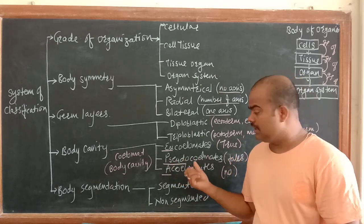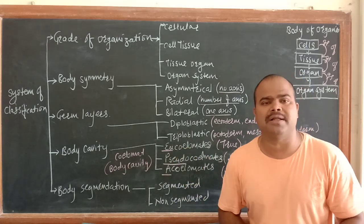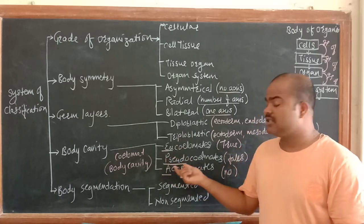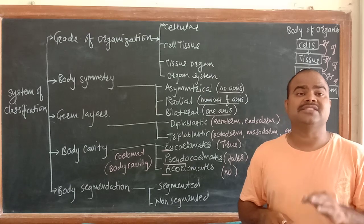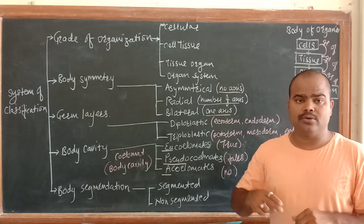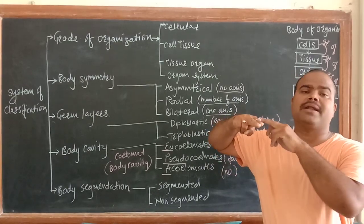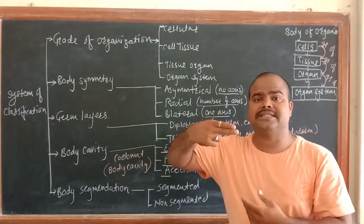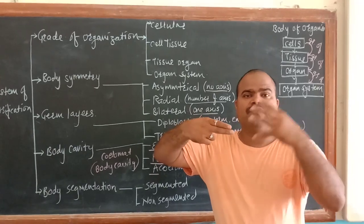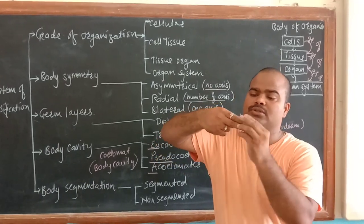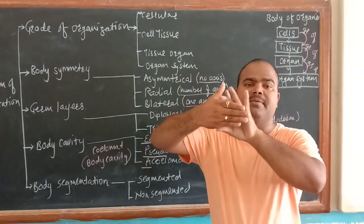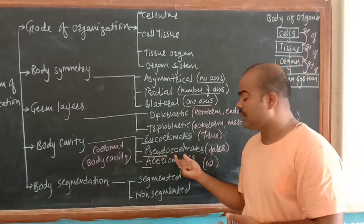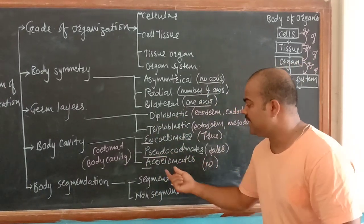Pseudocoelomate - if the coelom is not fully developed, it's called pseudocoelomate. We can see an example: a snake in normal condition is this size, but after eating a rat or frog, its size becomes much larger. This shows pseudocoelomate. The last one is acoelomate - the organism doesn't show any body cavity.